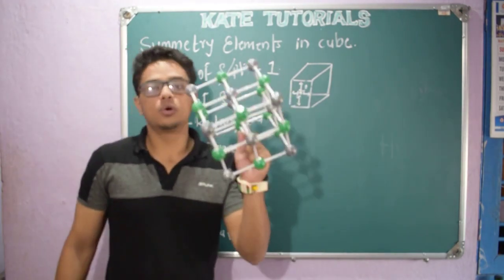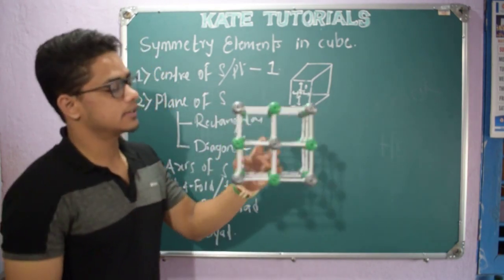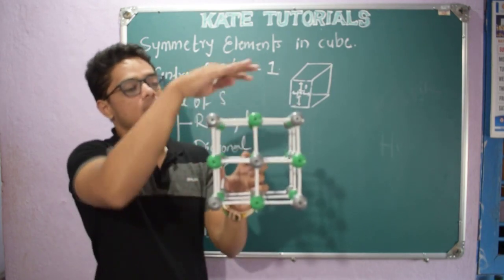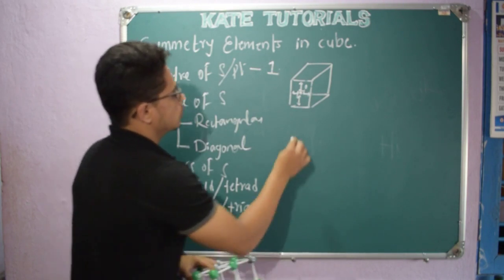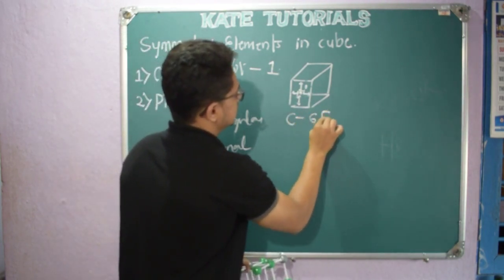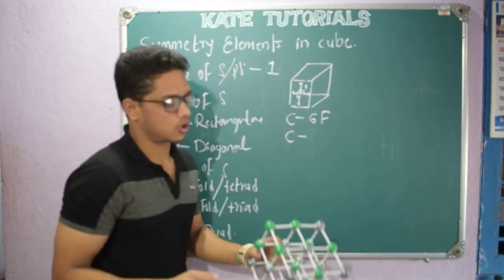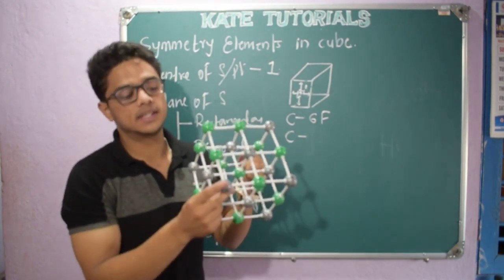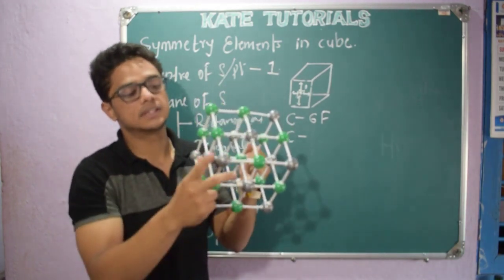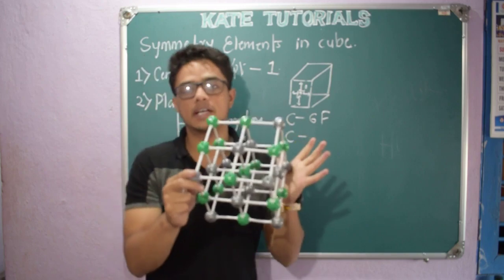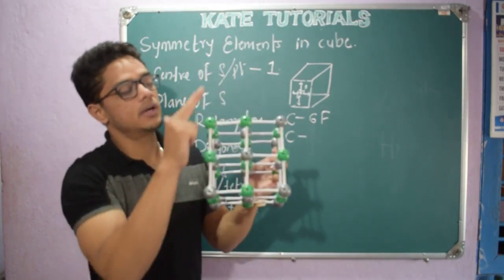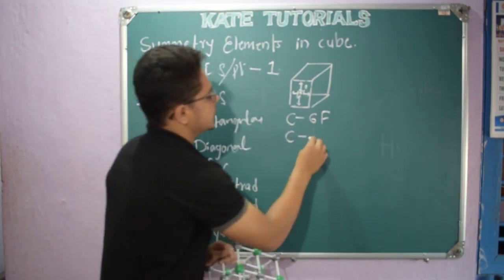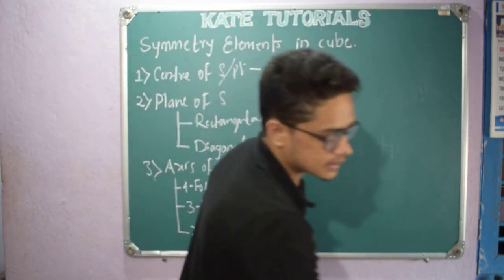Let me discuss the properties of a cube. Every cube contains six faces — one, two, three, four, five, six. Each cube also contains corners; the atoms at the vertices are the corner atoms. How many corners does a cube have? Counting them: one through eight. So in one cube we have eight corners and six faces.